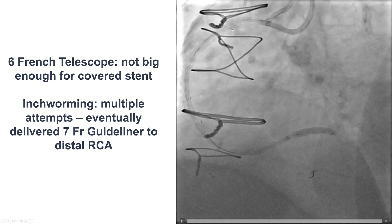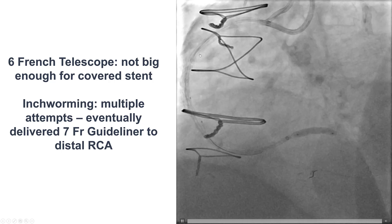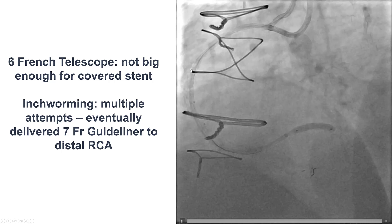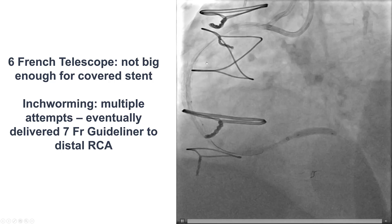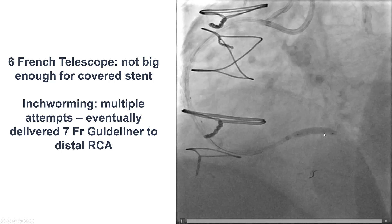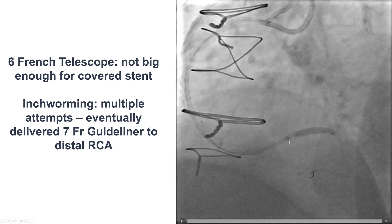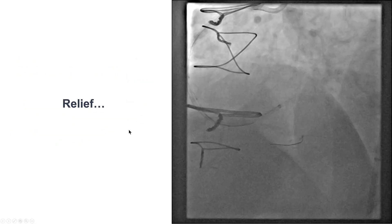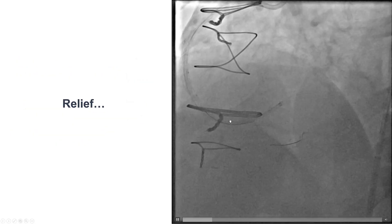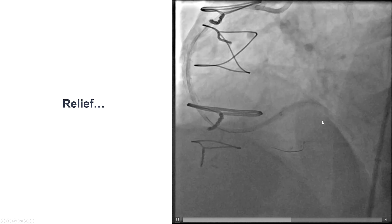Our only hope was to get a 7 French guide extension all the way to the area of the perforation. That was extremely difficult — it took almost half an hour, a lot of inch-worming, a lot of ballooning, a lot of dual hand technique and independent hand technique. But eventually we were able to deliver the guide extension all the way and deploy a covered stent, which fortunately successfully sealed the distal perforation.